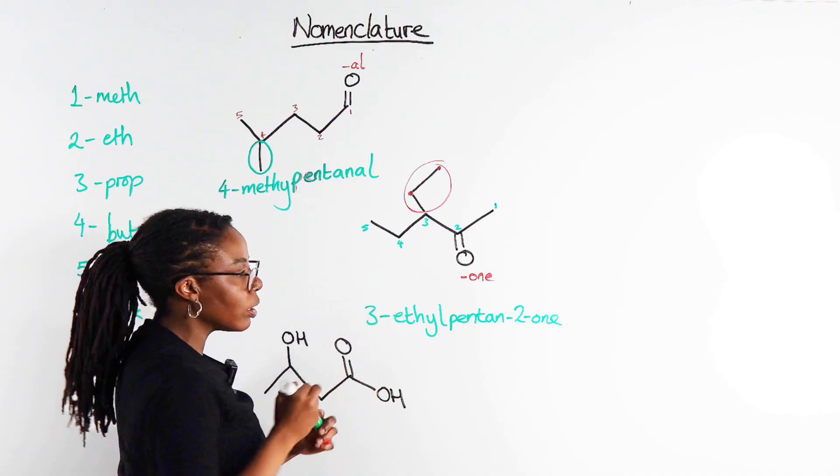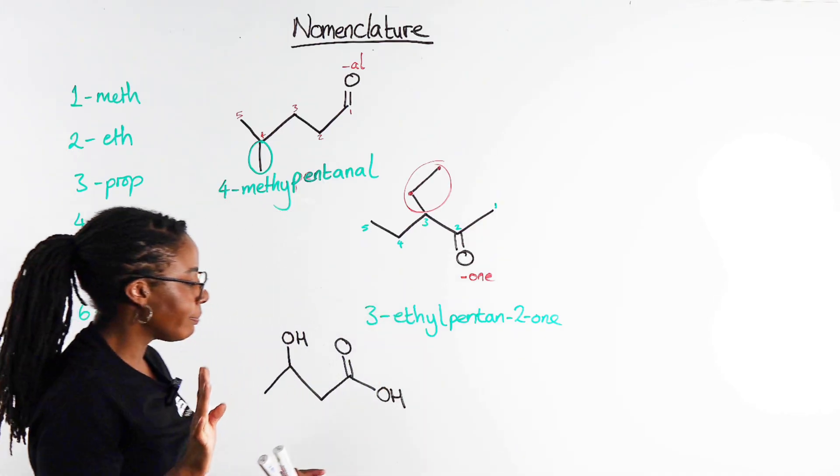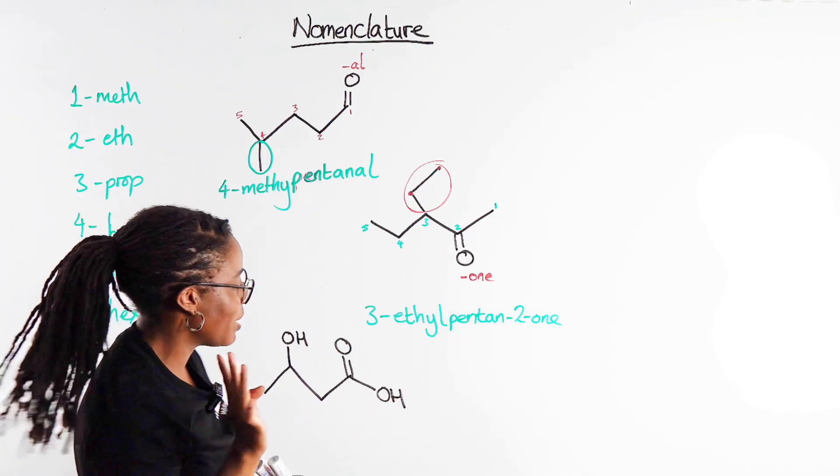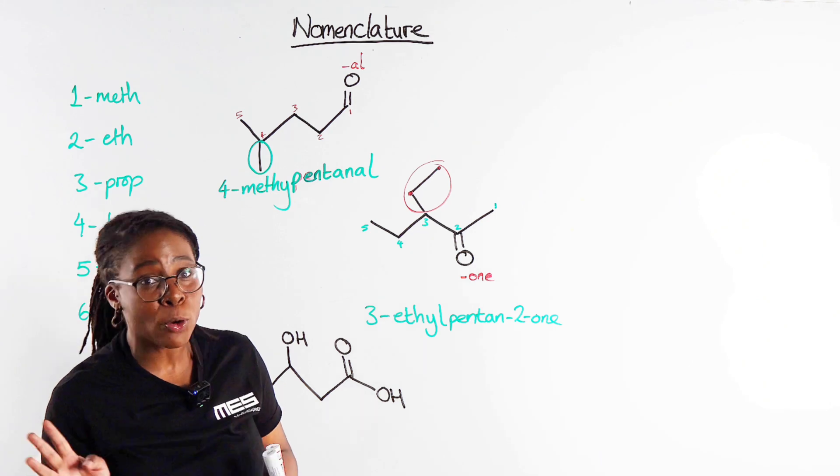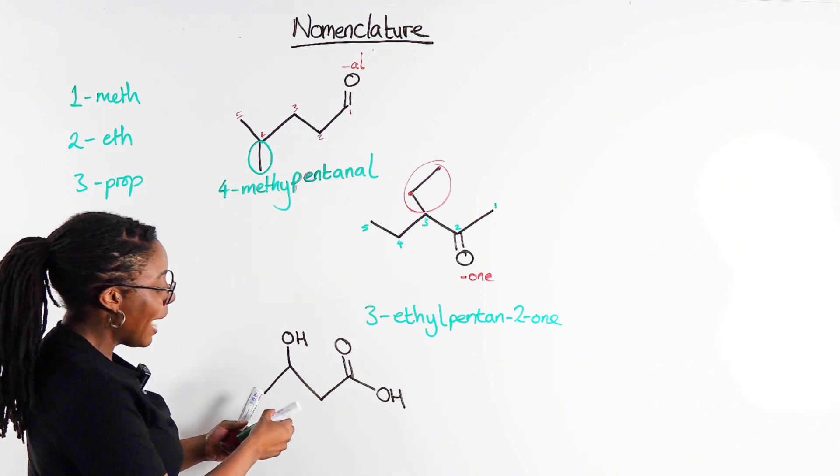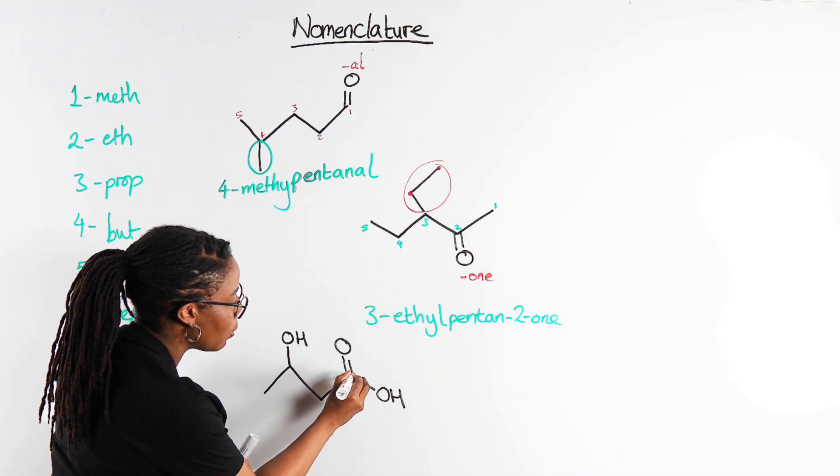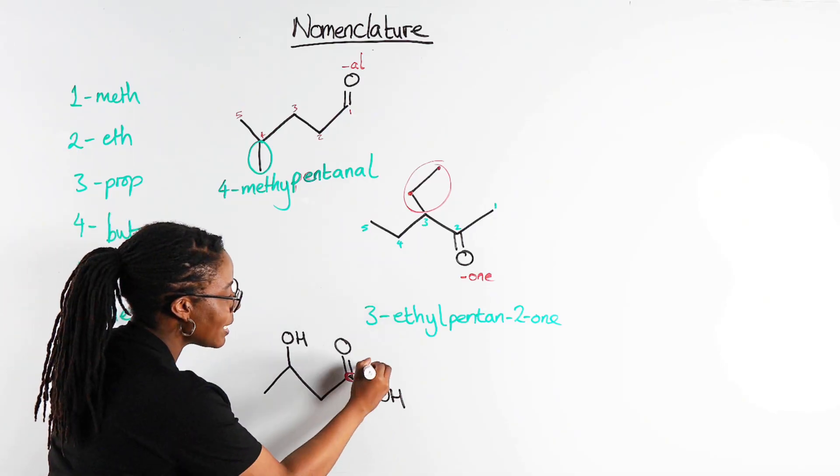And making sure to position that, we've already numbered this based on our high priority group, which means that our ethyl group is on carbon number three. And the last one, see if you can get this one before me. If you want to pause the video have a go and then press play. We have got another functional group that you're going to see mostly in year 13 but also in the oxidation of alcohols, and that is your carboxylic acid group. Our COOH, so this gets the ending oic acid.